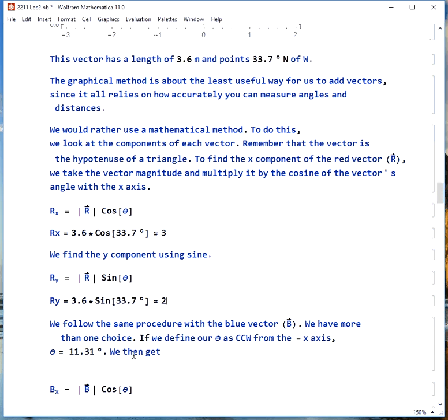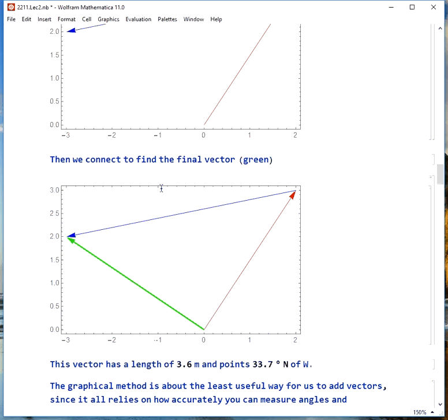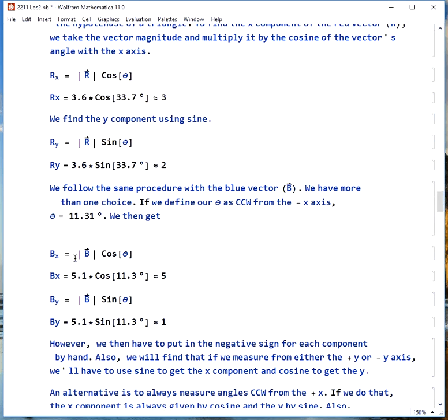We do the same thing with the blue vector. However, this is a little bit different. If we were to define our theta as counterclockwise from the negative x-axis, which would be this way, our theta is only 11.31 degrees. We can do that, and then we can do the same thing we did before. Bx is B cosine theta, By is B sine theta. We get 5 and 1. The problem is, these things actually point in the negative direction, both of them, so we have to put in that negative sign by hand.